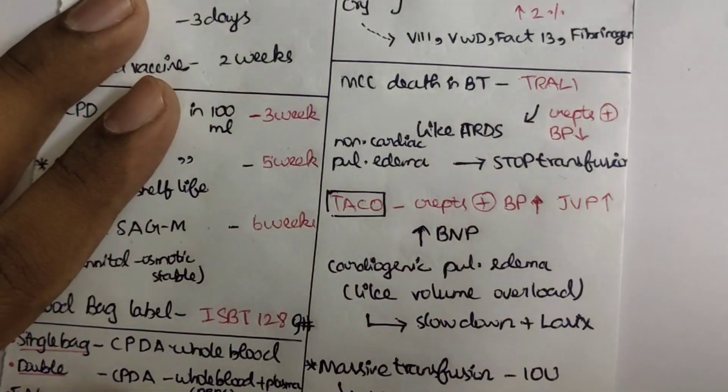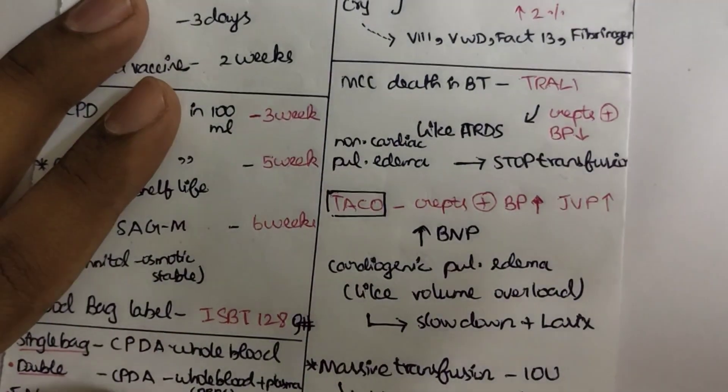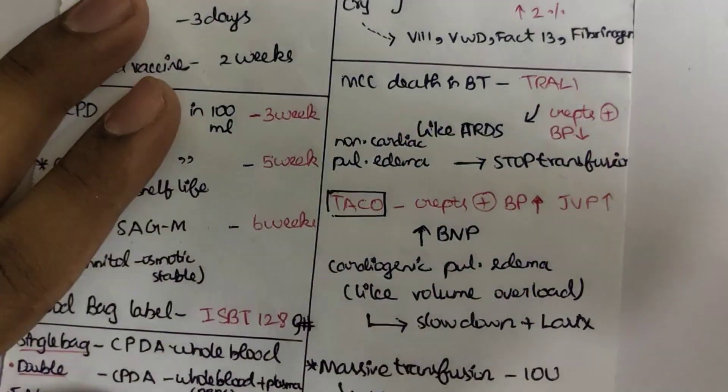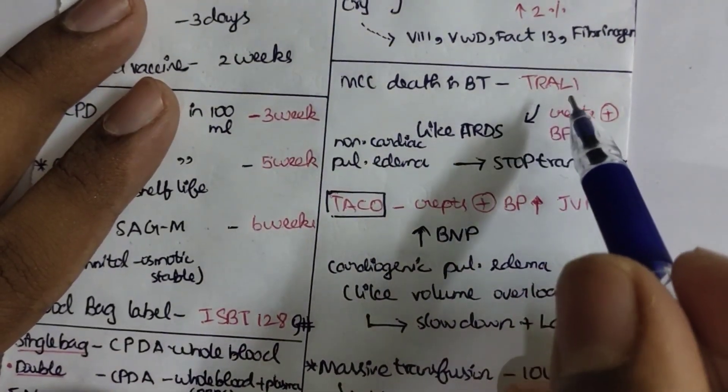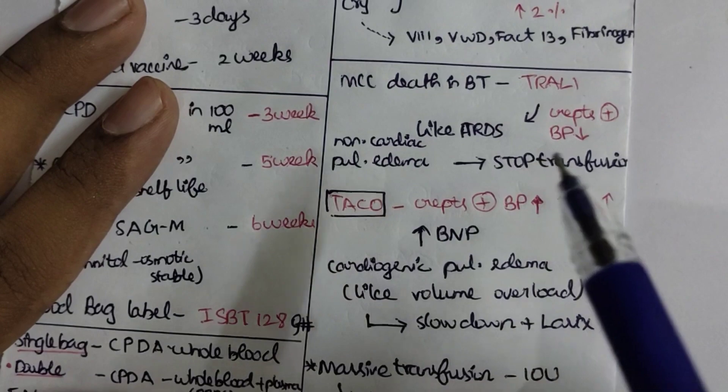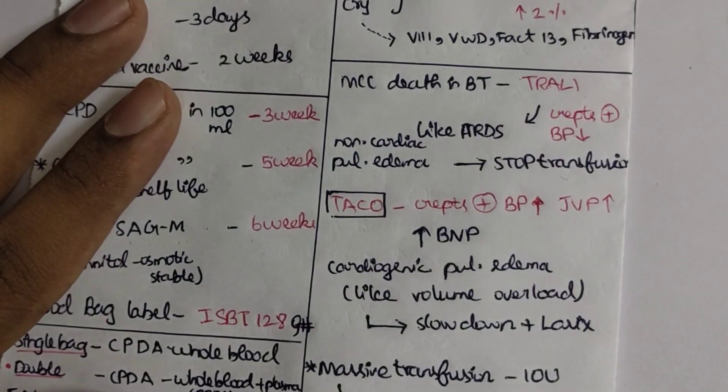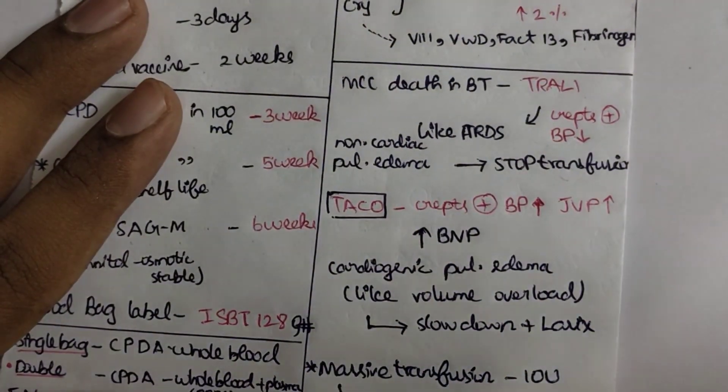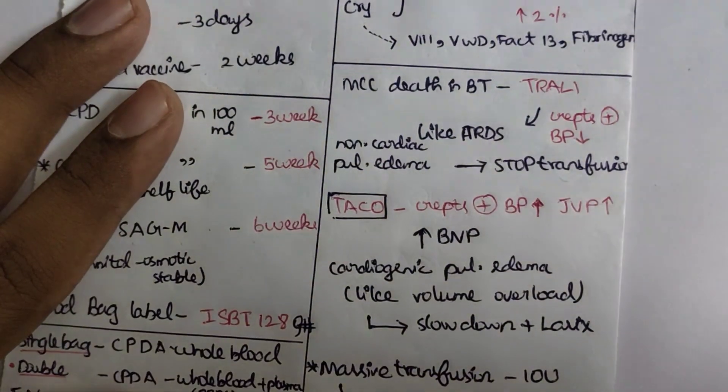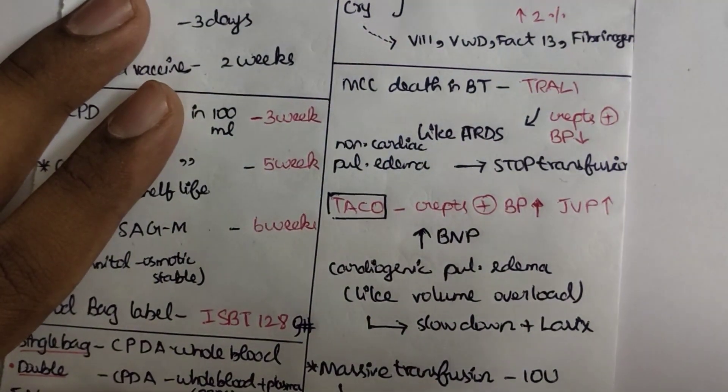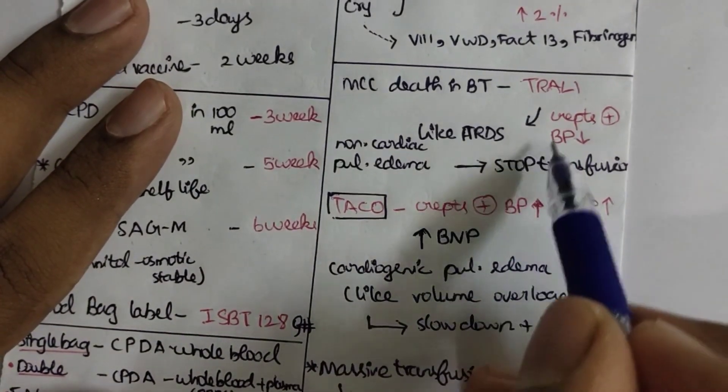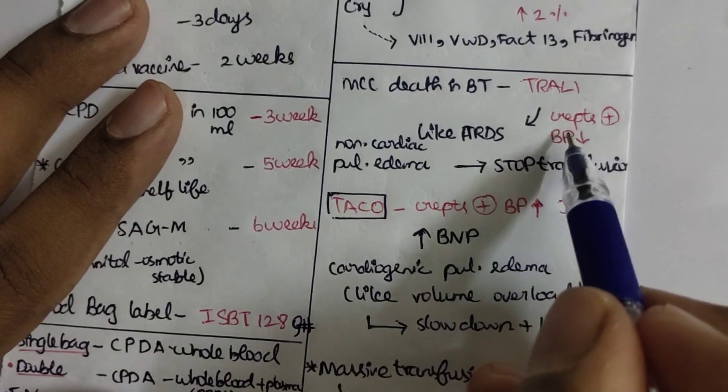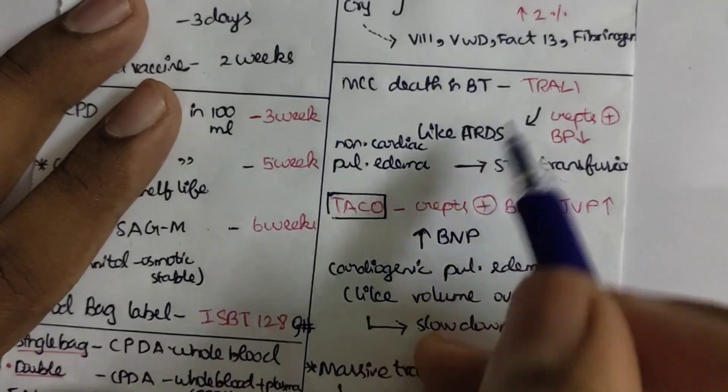If a patient is on blood transfusion and suddenly a death happens, the most common cause will be TRALI - transfusion-related acute lung injury. Its presentation is like ARDS. While auscultating the lung areas, you will hear crepitations. There will be a decrease in BP, which is the most important factor in differentiating TRALI and TACO.